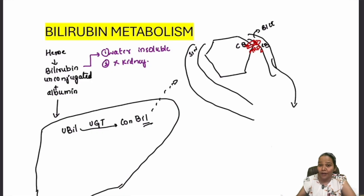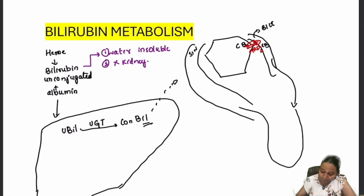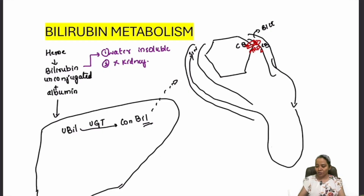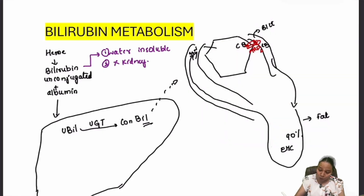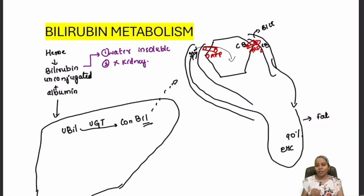From the bile, bilirubin enters the gut, and via enterohepatic circulation it comes back into the liver through the sinusoids. Conjugated bilirubin in the gut is involved in fat absorption. About 90% of bile undergoes enterohepatic circulation. There is also a transporter called OATP, which is responsible for bringing bilirubin back into the hepatocyte from the sinusoids.